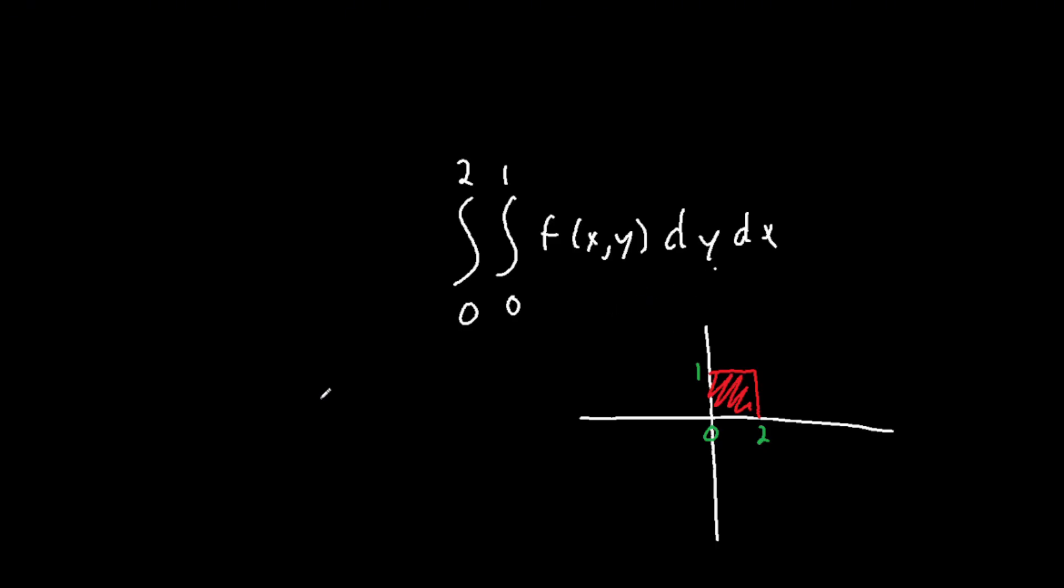So what do I mean by that? Well, dy's bounds are 0 and 1. In this case you're integrating upon an area, so 0 and 1 are the bounds for this first integral here. These are our dy bounds, or our y bounds.